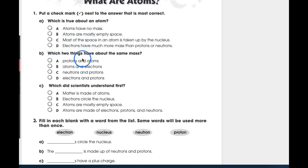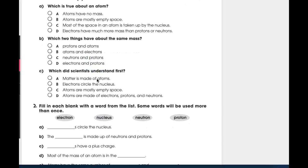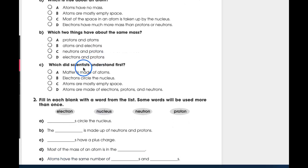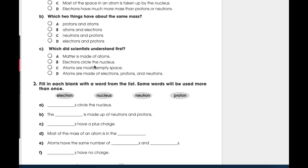B, which two things have about the same mass? That was definitely in those one through seven that I just showed you. A, protons and atoms. B, atoms and electrons. C, neutrons and protons. D, electrons and protons. Right now you can eliminate A. A is not the correct answer. So you're choosing from B, C, or D.